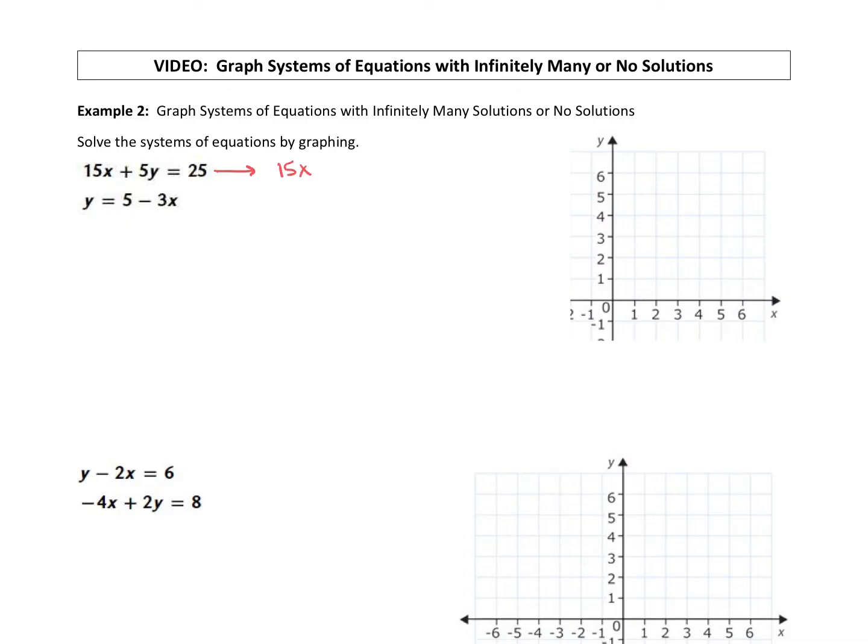So I'm just going to rewrite it over here. Let's take the two steps to solve for y. We always start by getting the x term to the other side with addition or subtraction, so we subtract 15x. That gives us 5y equals negative 15x plus 25. Now we divide everything by 5, so we have y equals negative 3x plus 5.